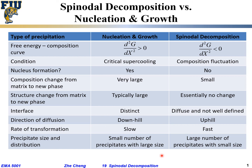This table nicely summarizes the difference between spinodal decomposition and nucleation and growth as two different ways to achieve solid state transformation such as precipitation in the solid state.